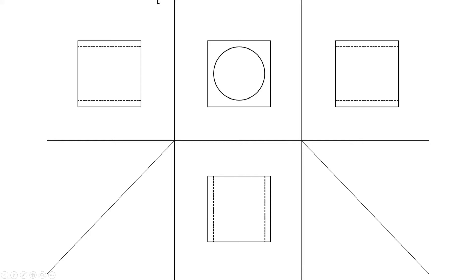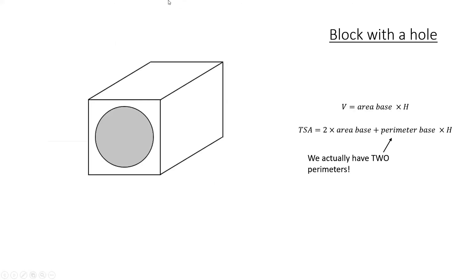This causes a bit of a complication, because if you think about it, we have a perimeter here of this base, but because we've cut a hole in it, we've got another perimeter. So, we actually have two perimeters here.